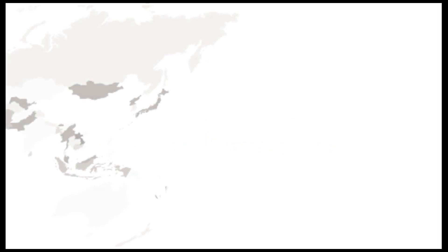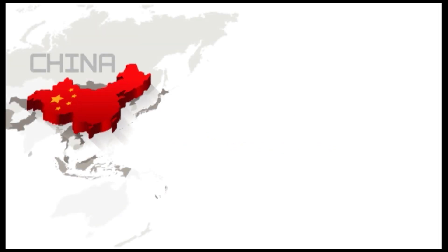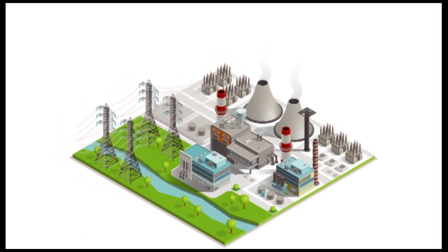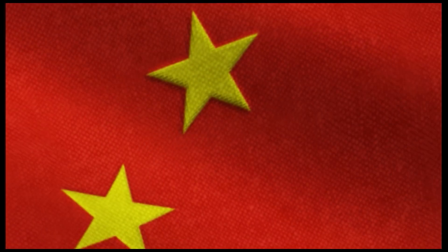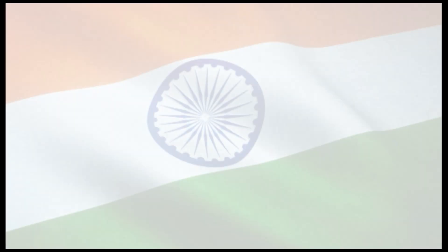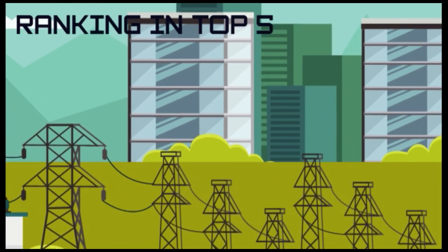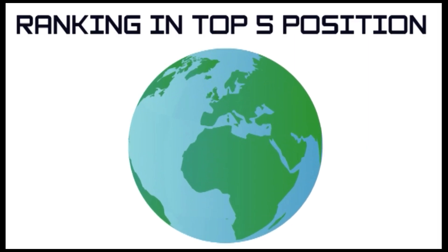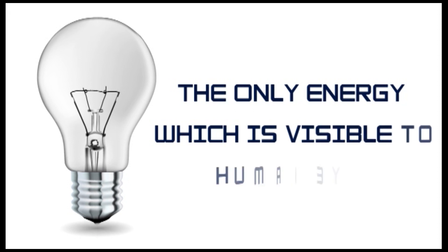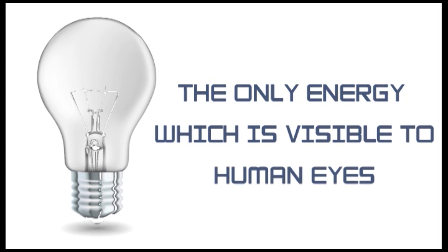The last segment of this video is Facts Bucket. China is the largest electrical energy producer of the world. Both China and India are ranked at top 5 positions in electricity producing. Light energy is the only form of energy which is visible to human eye comparing to all the forms of energy.